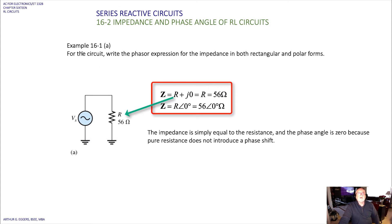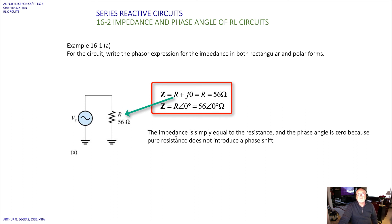Looking at an example, we want to write the phasor expression for impedance in both rectangular and polar forms. In this case, since there is no inductor, we have a pure resistive circuit with a sinusoidal input, R equals 56 ohms. The J term XL is zero, so the impedance is simply equal to the resistance and the phase angle is zero, because pure resistance does not introduce a phase shift.